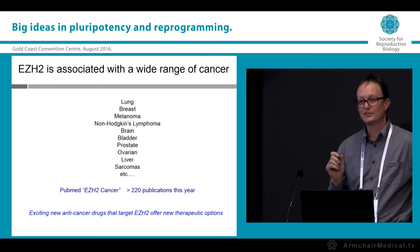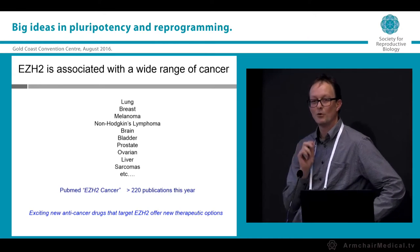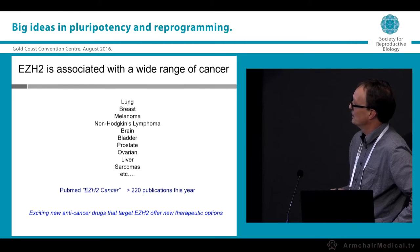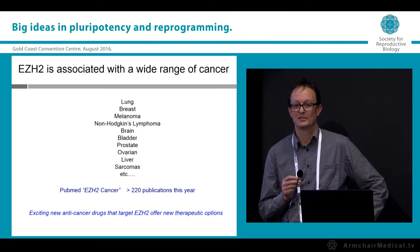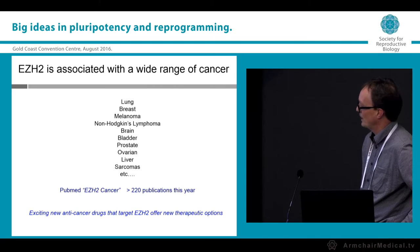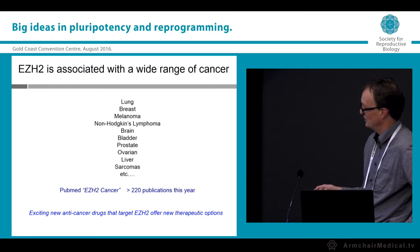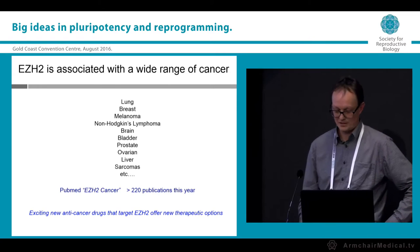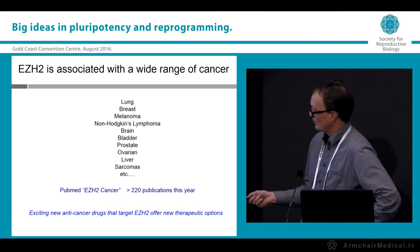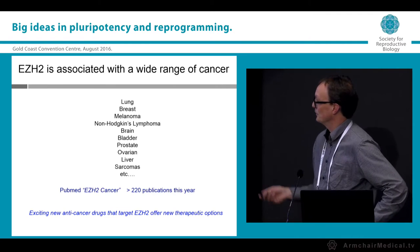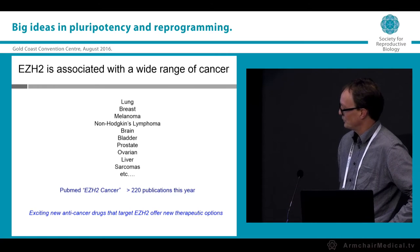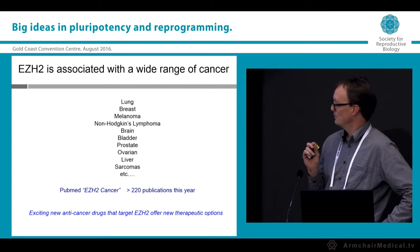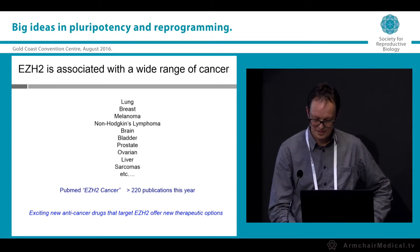EZH2 is of particular interest because it is expressed in essentially all cells at some stage in development, regulating H3K27 methylation and the genes affected by that epigenetic modification. It is also misregulated in many cancers — EZH2 is becoming a popular gene in oncogenesis, with more than 220 publications in 2016 alone on EZH2 in cancer. There has been a significant focus on EZH2 for the development of anti-cancer drugs that block EZH2 function, offering exciting new therapeutic possibilities.